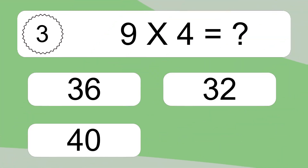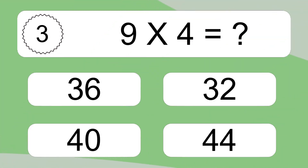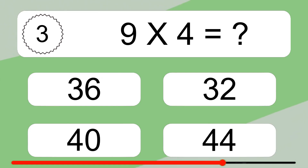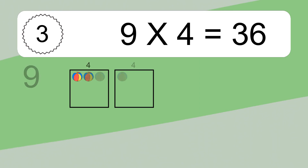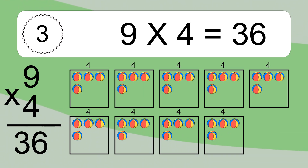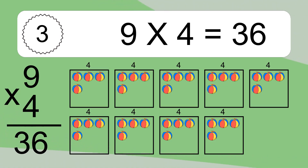9 times 4 equals what? 9 times 4 equals 36. We have 9 boxes, and each box has 4 colorful balls inside. If you count all the balls in all the boxes together, you will have 9 times 4 balls. This equals 36 balls.